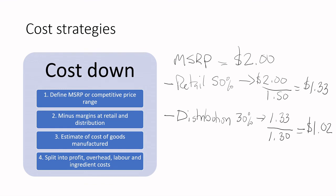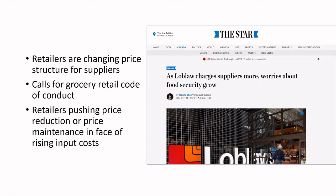Now let's do it backwards — the cost-down approach. Say the suggested retail price is $2.00. Retail takes its 50% margin, so $2.00 ÷ 1.5 = $1.33 — that's the price the grocery store received it at. Then the distributor takes 30%, so $1.33 ÷ 1.3 = approximately $1.02 — that's the cost of goods manufactured. From that $1.02 you then split into profit, overhead, labor, and ingredient costs.